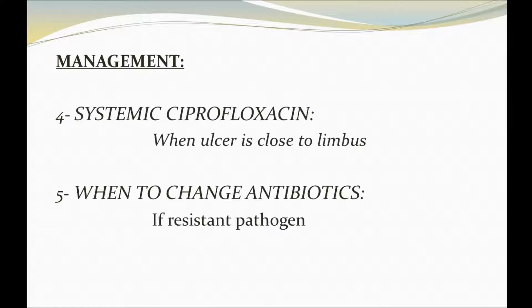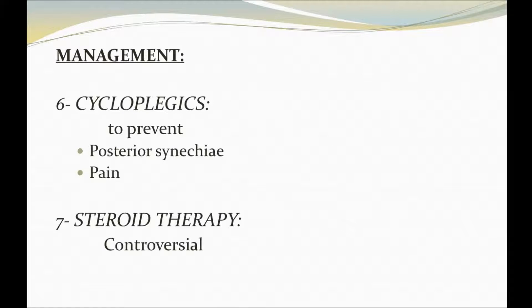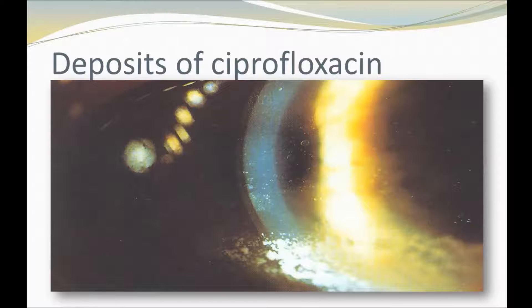The fourth option is systemic prophylaxis, which can be used when the ulcer is close to the limbus. The fifth is when to change antibiotics — we can change if a resistant pathogen occurs. The sixth is cycloplegics, which can be used to prevent posterior synechia and pain. The seventh is steroid therapy, which is controversial. The picture shows deposits of Aspergillus in the cornea.